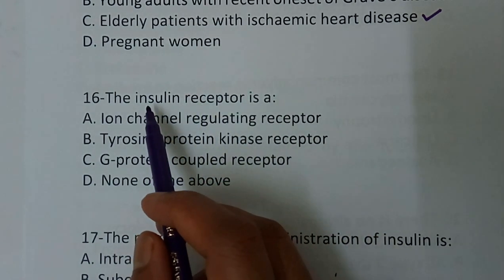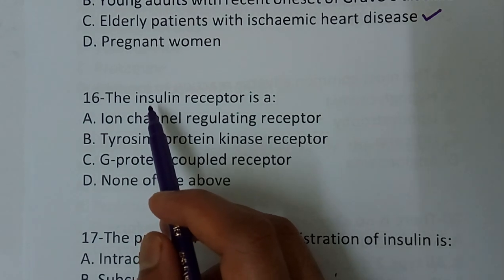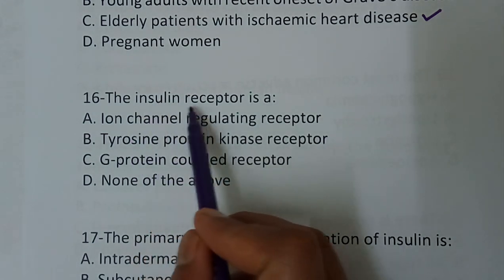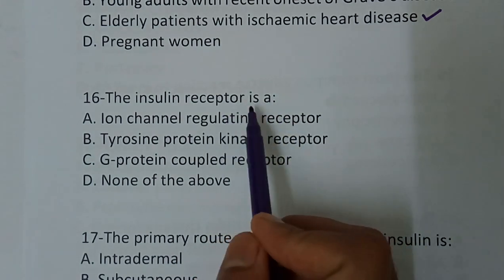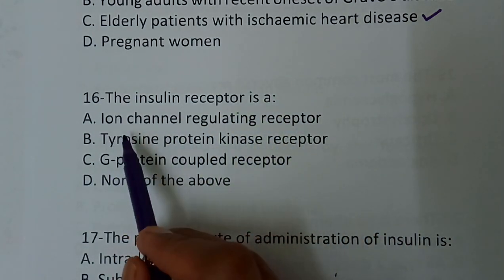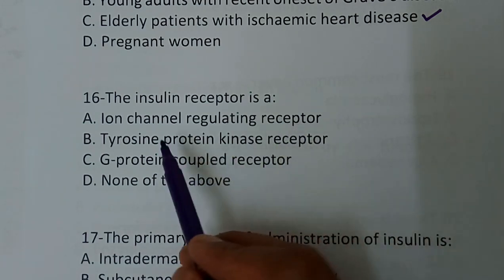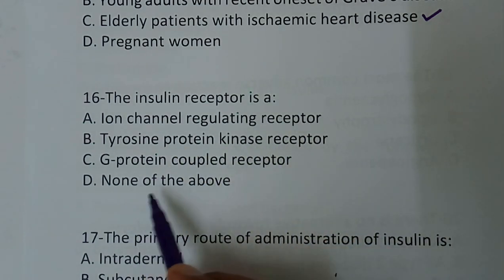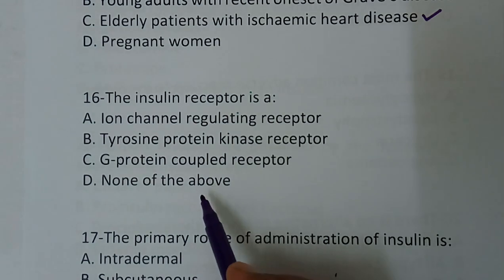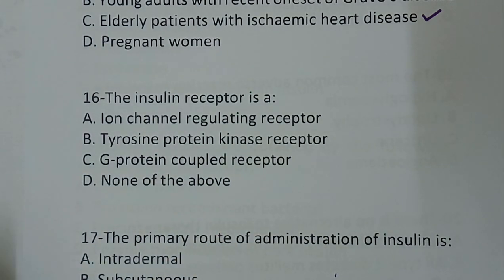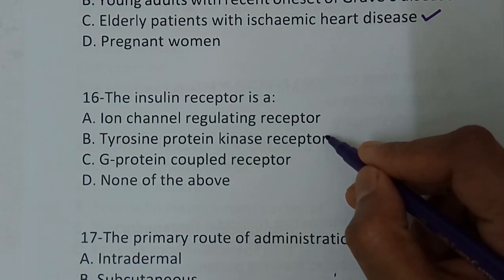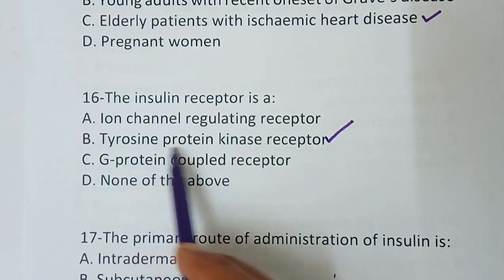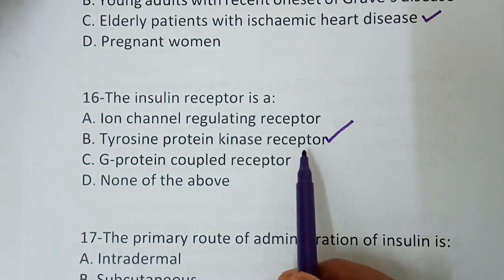Question number 16 — this is the second part of this section. The insulin receptor is a: option A, ion channel regulator receptor; option B, tyrosine protein kinase receptor; option C, G protein coupled receptor; option D, none of the above. The correct answer is option B — tyrosine protein kinase receptor. The insulin receptor is a tyrosine protein kinase receptor.